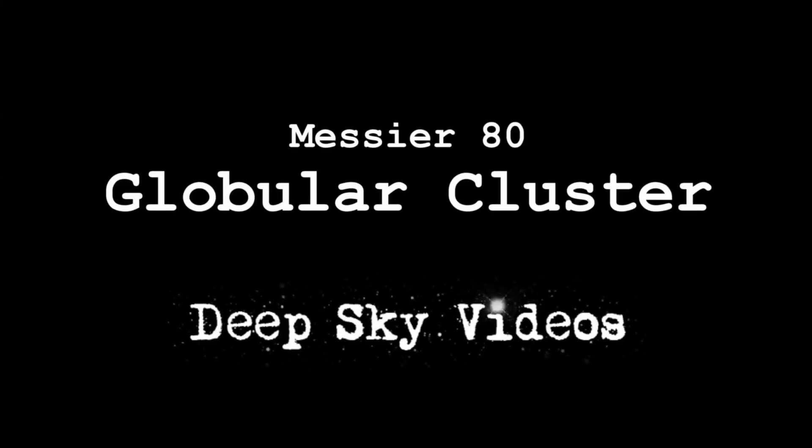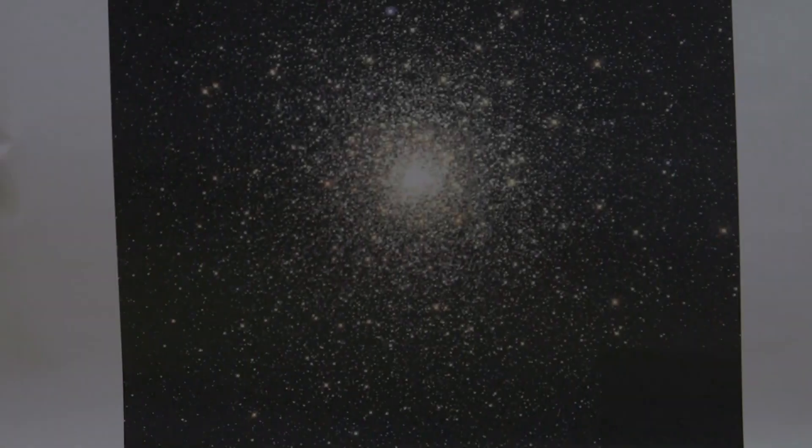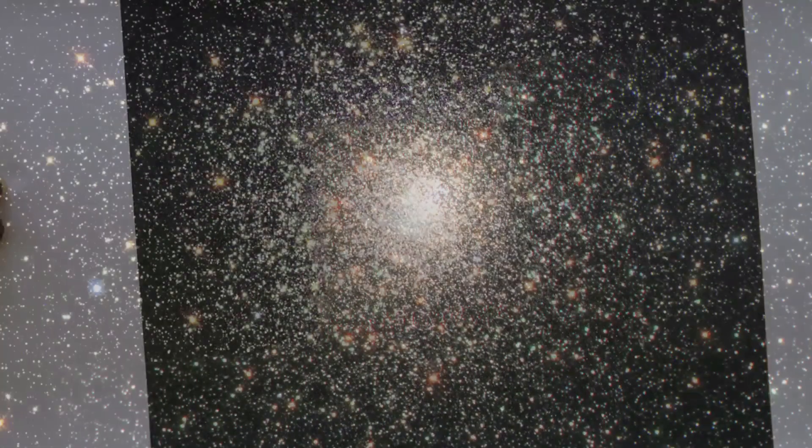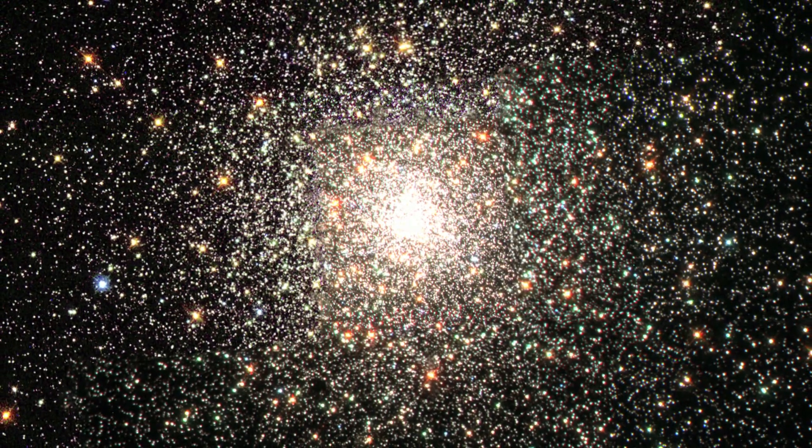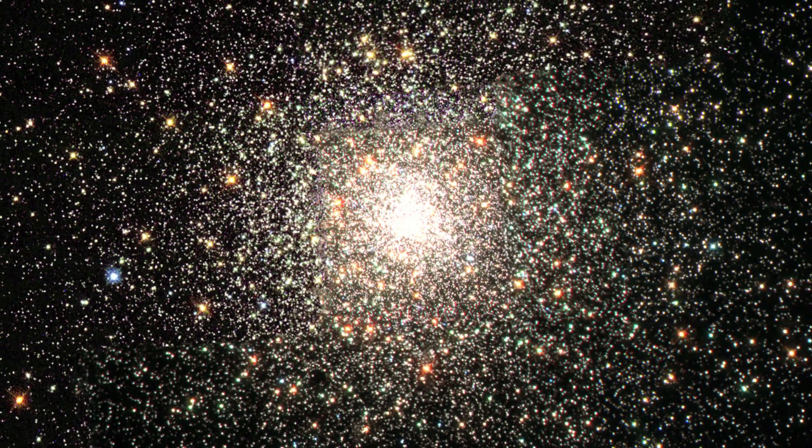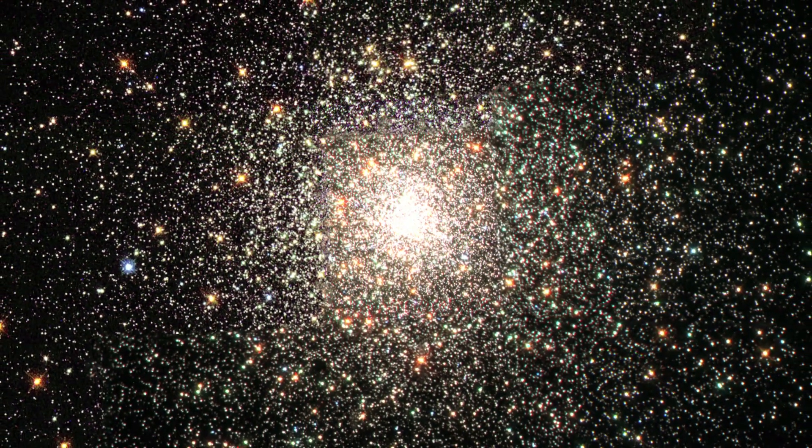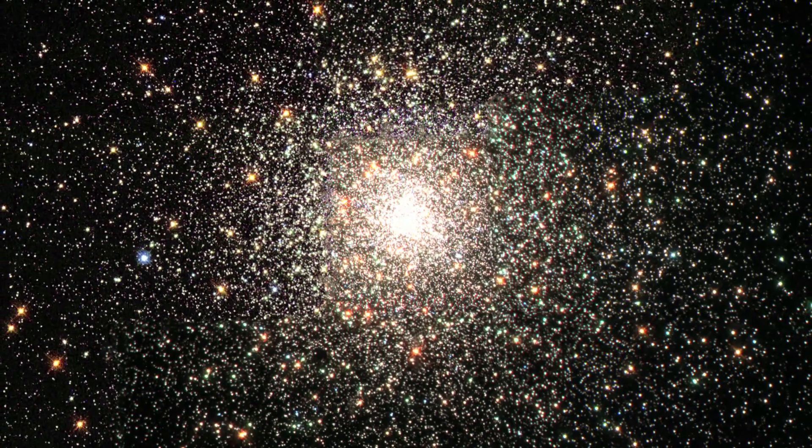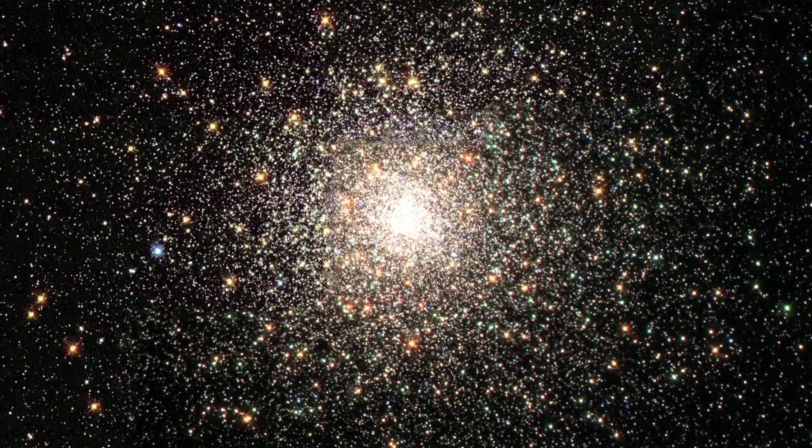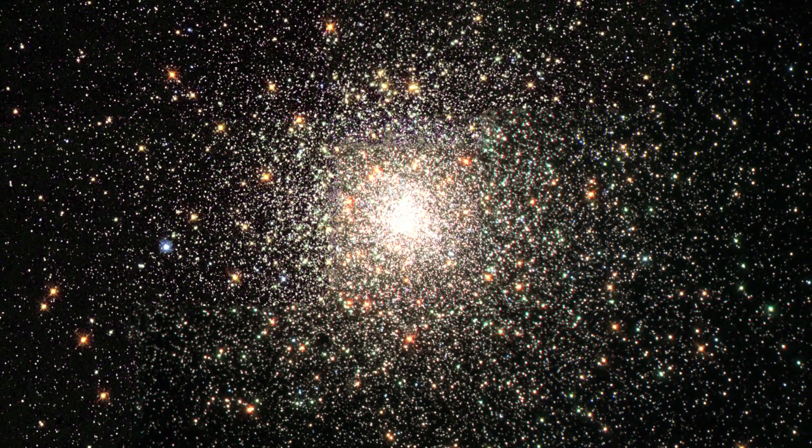What have we got today? What are we looking at? So we're looking at M80 today, which is a globular cluster in the constellation of Scorpius. It's really easy to find because it's so dense. It's about 100,000 stars in M80. It's one of the densest known globular clusters in the Milky Way, so it's a really exciting cluster.